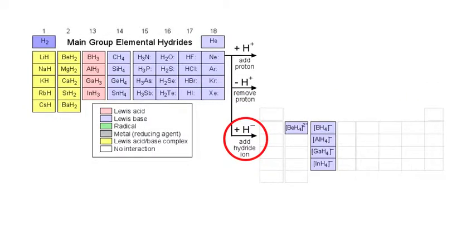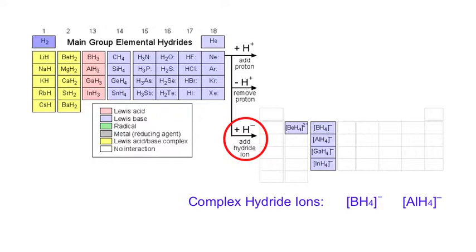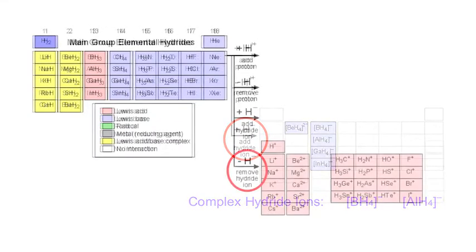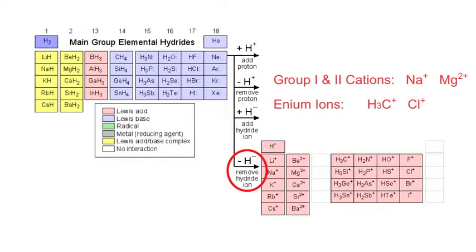Adding hydride ion H− gives species such as boron hydride BH4− and aluminium hydride AlH4−, which are important as reducing agents. Removing H− from our set of main group elemental hydrides: hydrogen H2 gives the proton H+, an important Lewis acid. The saline hydrides give the very common metal cations, and the p-block Lewis bases generate the conjugate aenium ions such as CH3+; water gives OH+, and the halogen hydrides give the corresponding halogen cations.